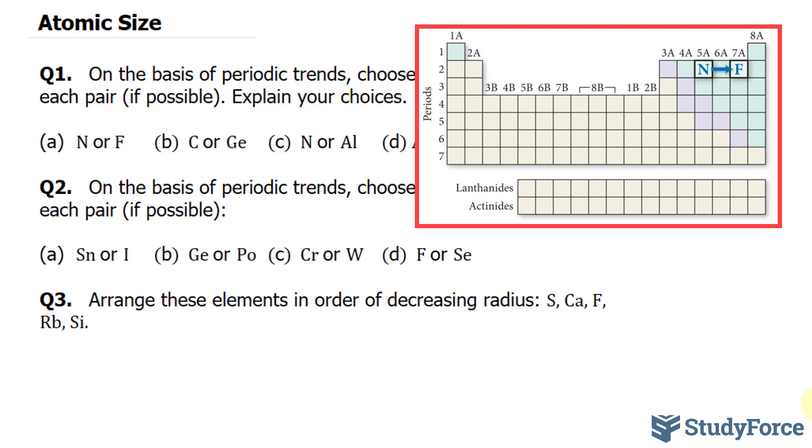And as you move to the right across a row, the nucleus gets larger. Therefore, the effective nuclear charge experienced by the outermost electrons increases.